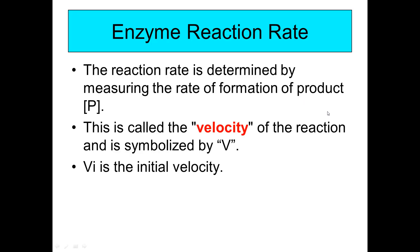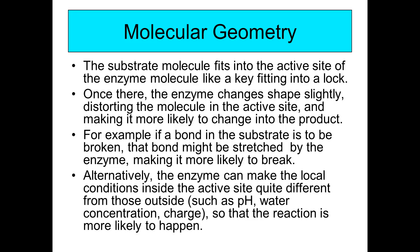The enzyme reaction rate is determined by measuring the rate of formation of product, abbreviated as [P], called the velocity of the reaction, symbolized by V. VI is the initial velocity of the enzyme. Thinking about molecular geometry, the substrate molecule fits into the active site of the enzyme like a key fitting into a lock. Once there, the enzyme changes shape, distorts the molecule in the active site, and makes it more likely to change into the product.